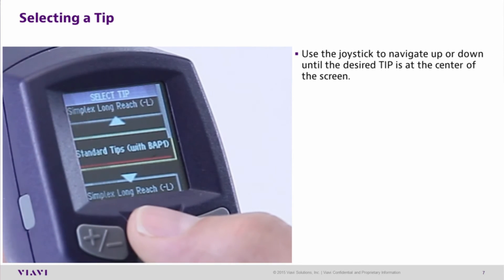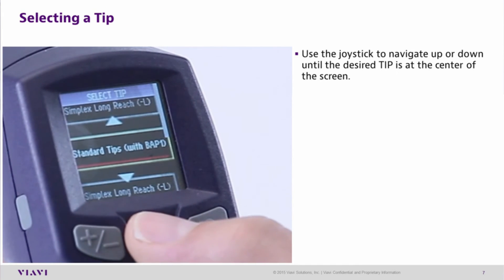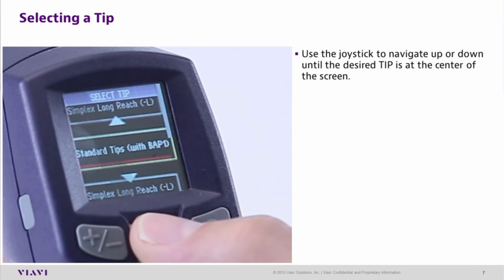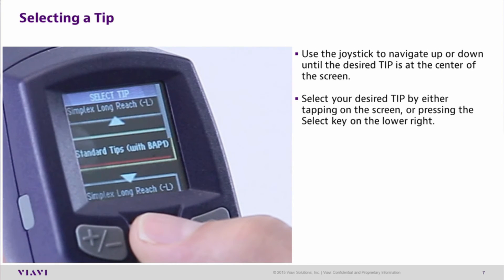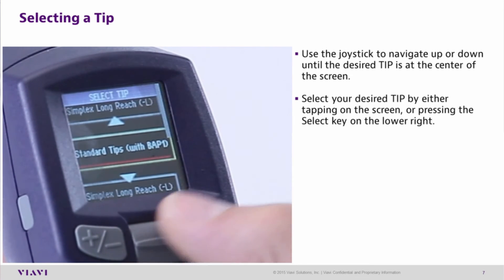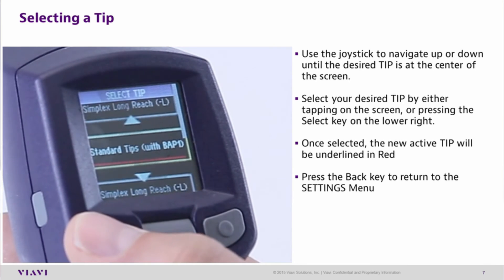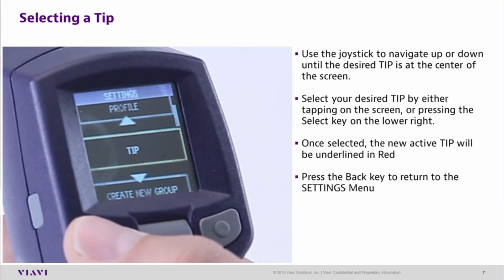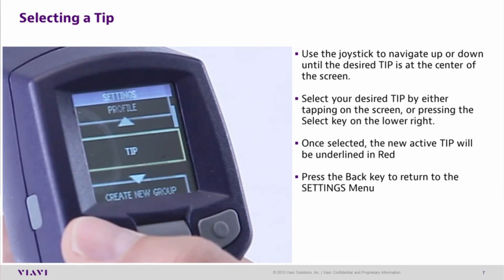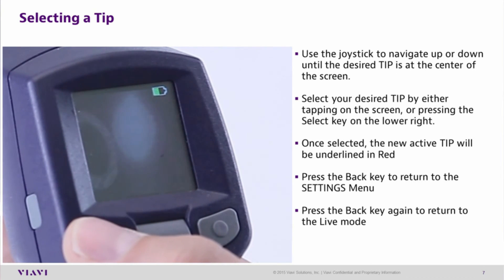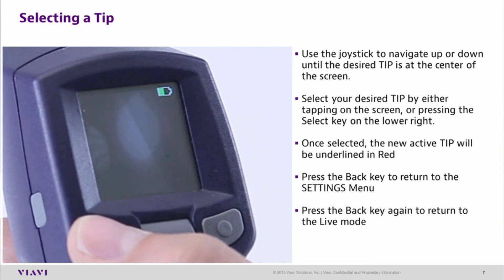Selecting a tip. Use the joystick to navigate up or down until the desired tip is at the center of the screen. Select your desired tip by either tapping the screen or pressing the select key in the lower right. Once selected, the new active tip will be underlined in red. Press the back key to return to the settings menu. Press the back key again to return to live mode.